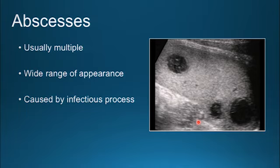Abscesses within the spleen are usually multiple in nature. They can range from anechoic with well-defined walls to echo-filled, septate, or even air-filled. This is again caused by an infectious process.